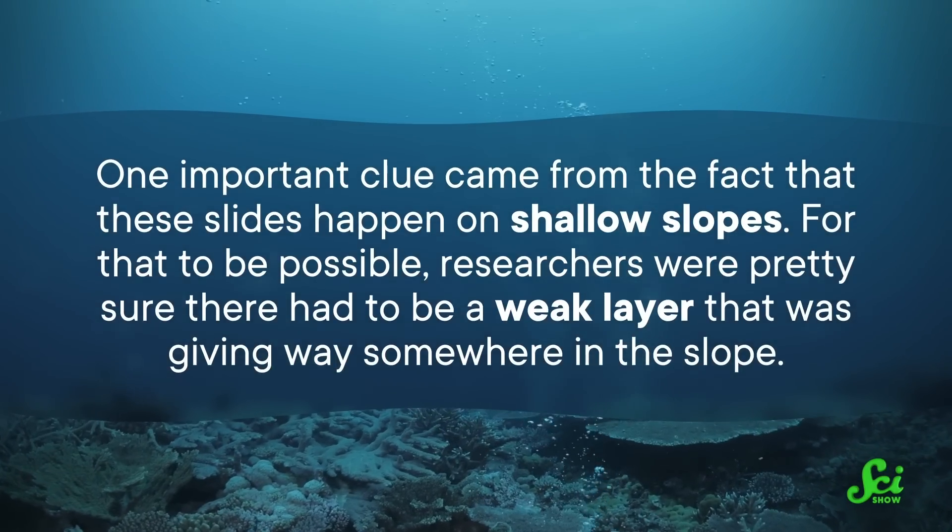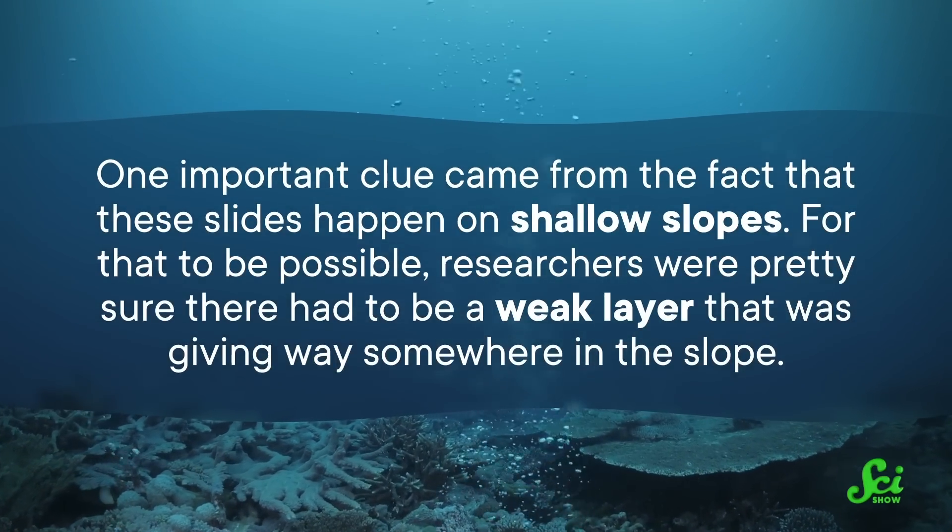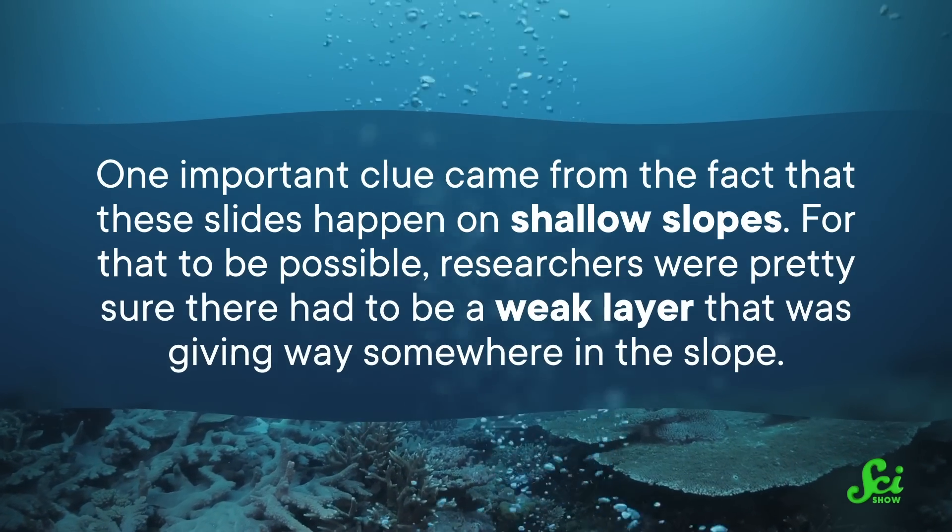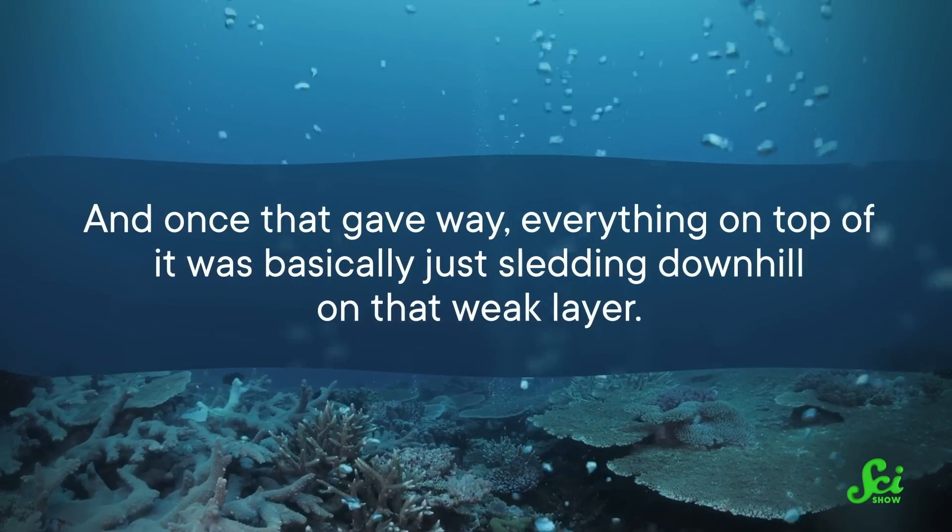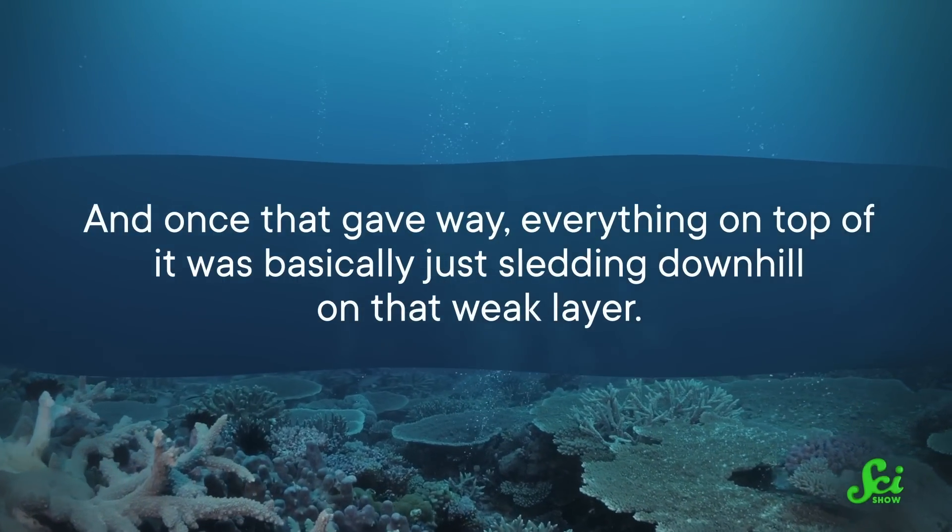One important clue came from the fact that these slides happen on shallow slopes. For that to be possible, researchers were pretty sure there had to be a weak layer that was giving way somewhere in the slope. And once that gave way, everything on top of it was basically just sledding downhill on that weak layer. The question was, what was that layer? Some thought it might be a layer of rock or sediment that was prone to breakage or collapse. Others thought it might be grains that were saturated with water. In a 2018 study, one team considered another possibility. What if it was a layer of tiny, dead organisms?